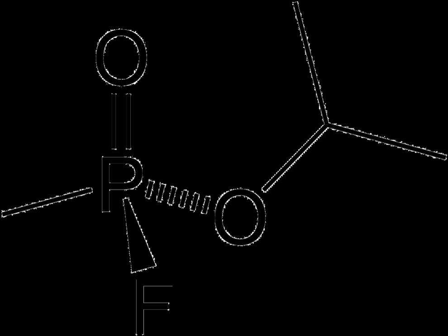Specifically, sarin is a potent inhibitor of acetylcholinesterase, an enzyme that degrades the neurotransmitter acetylcholine after it is released into the synaptic cleft. In vertebrates, acetylcholine is the neurotransmitter used at the neuromuscular junction, where signals are transmitted between neurons from the central nervous systems to muscle fibers.